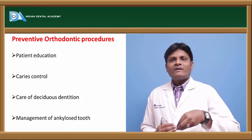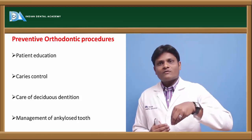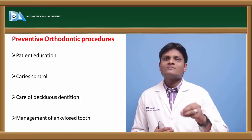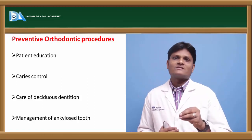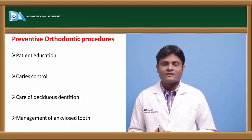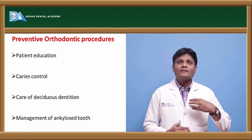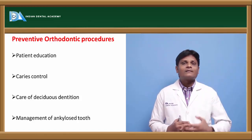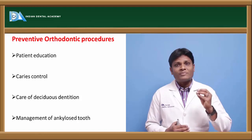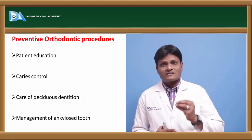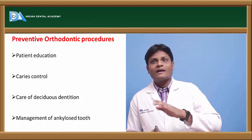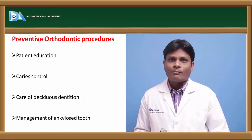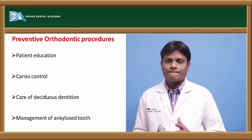In order to prevent the loss of arch length, proximal caries lesions — particularly in the deciduous dentition — should be addressed at an earlier stage, thereby preserving the arch length and eliminating the occurrence of malocclusion, that is, crowding.